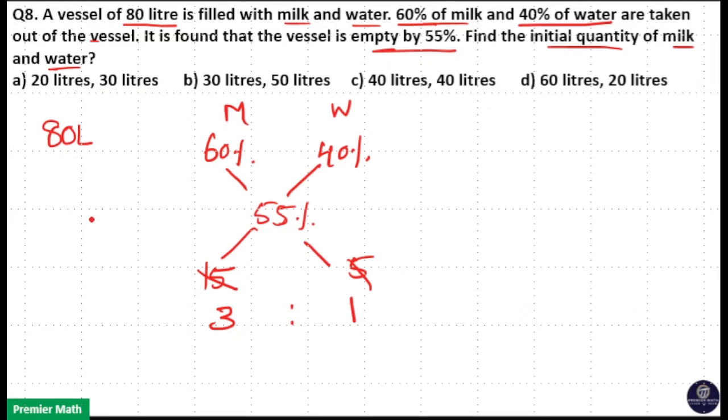So 3 is to 1 is your initial quantity of milk and water. 3 plus 1 is equal to 4 parts. 4 parts is equal to initial quantity which means 80 liter. Total initial quantity is 80 liter.